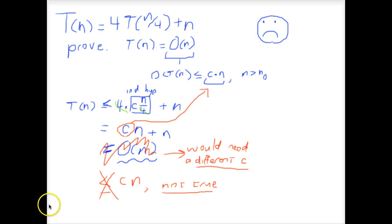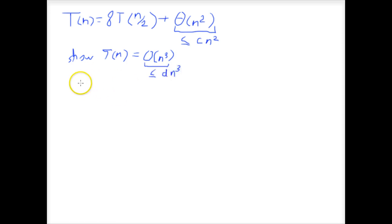I'll give you another example of a fallacy like this. So we've got another example where we have a recurrence: T(n) = 8T(n/2) + Θ(n²). And that Θ(n²) means there's some function which is less than or equal to cn². We want to show that T(n) = O(n³), which means that there's another constant d, and T(n) is less than dn³ for some large n.